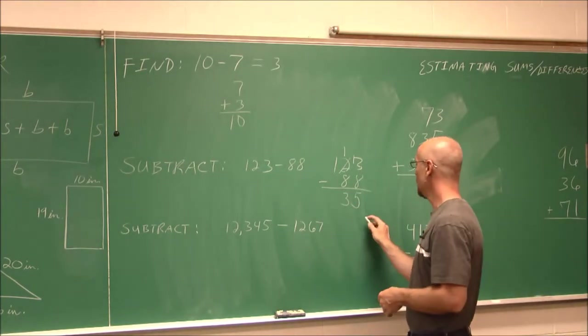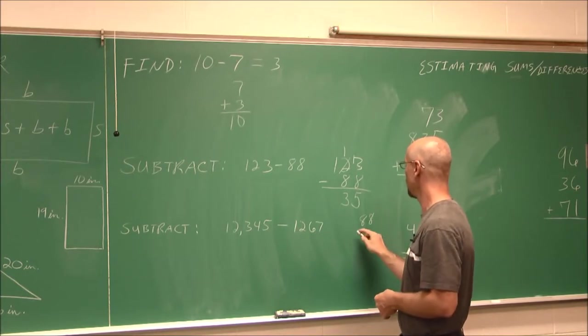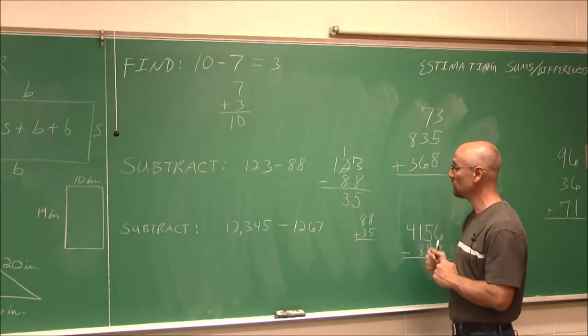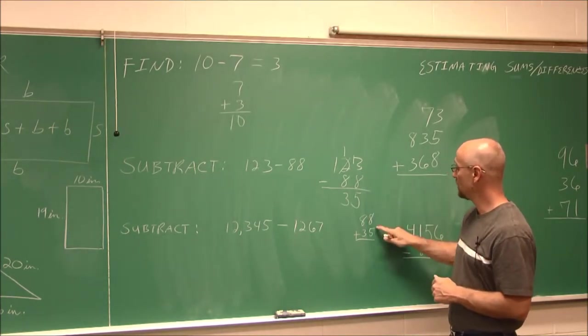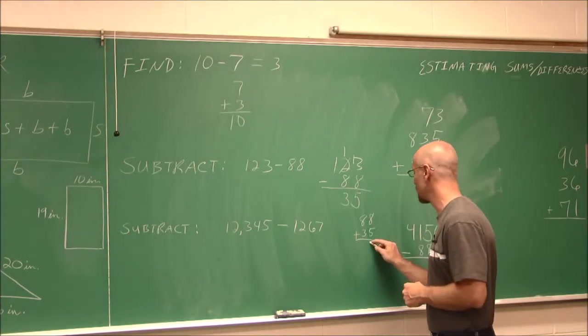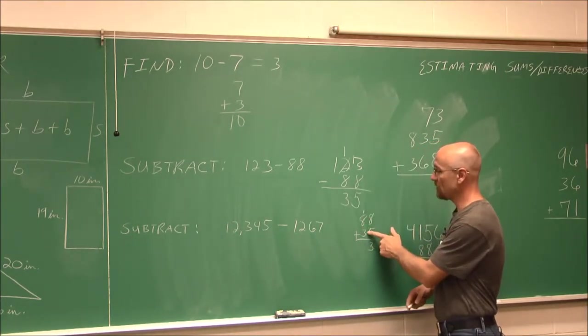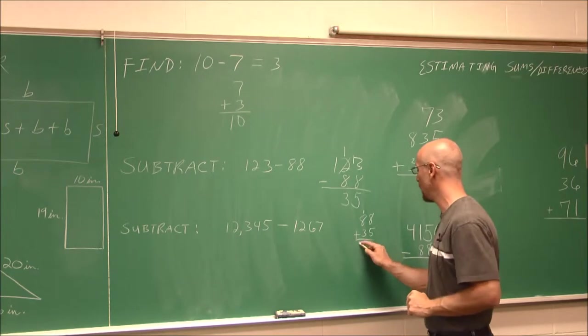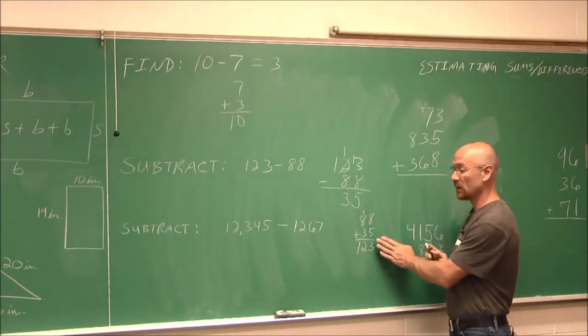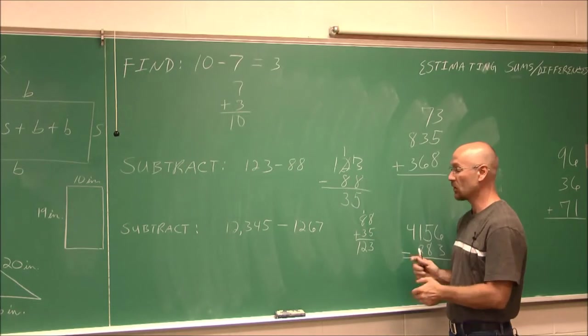Let's check our work. If I take 88 and I add 35, I hope to get 123. So I'm checking my work using addition. 8 and 5 is 13, carry the 1. 8 and 3 is 11, plus one more is 12. I have 123. So I check my work using the opposite operation. So I'm pretty sure that I have the right answer to this subtraction problem.